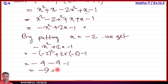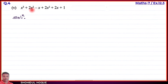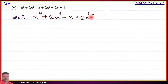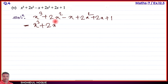Part number four solved. Part number five: the expression is x cube plus 2x square minus x plus 2x square plus 2x plus 1. There are no brackets so we directly identify like terms. x cube has no like term, keep as it is. For x square: 2x square and 2x square are like terms. For x: minus x and plus 2x are like terms.